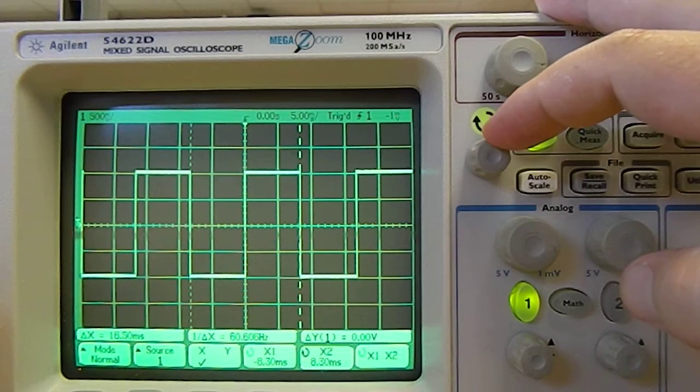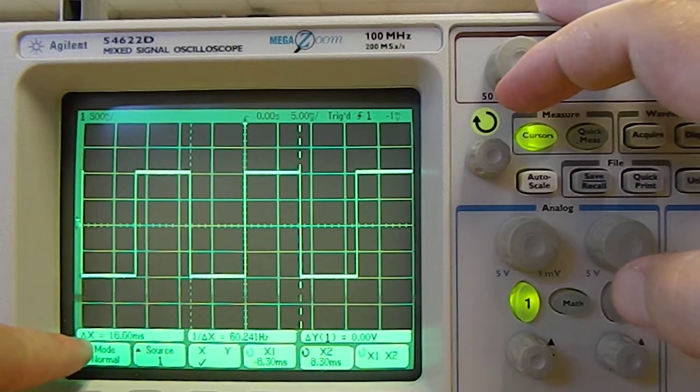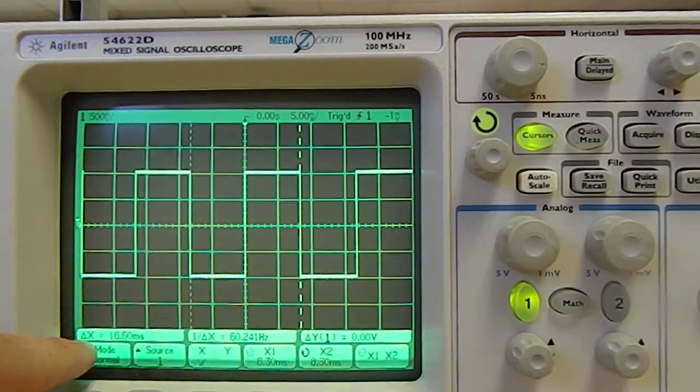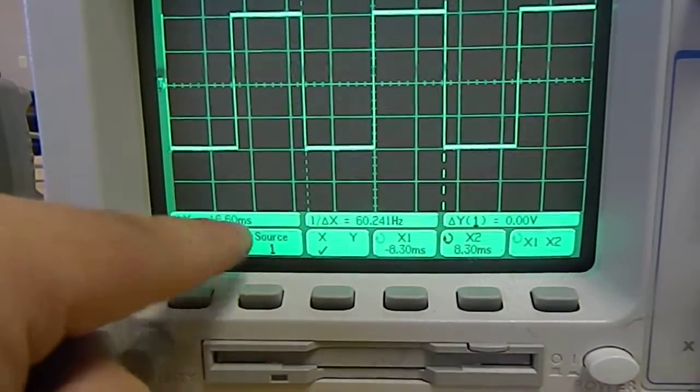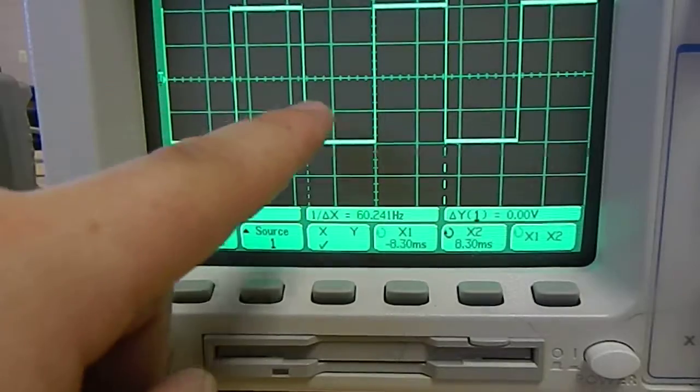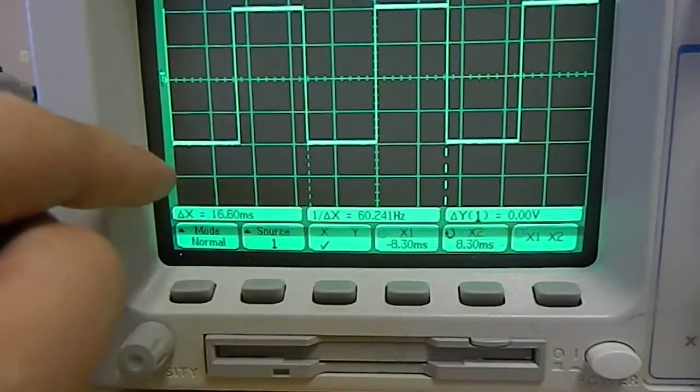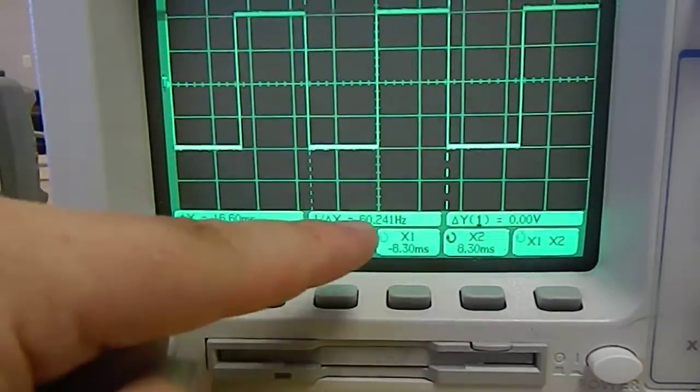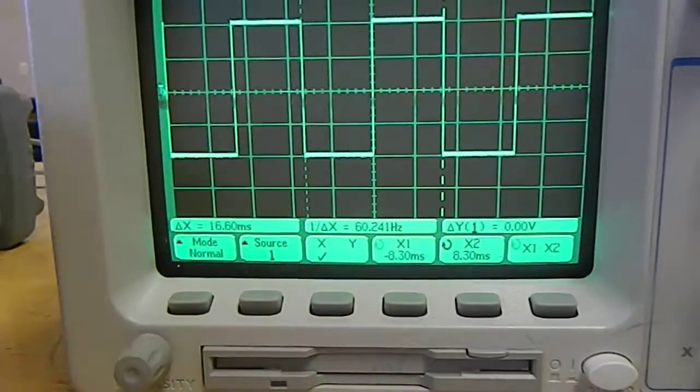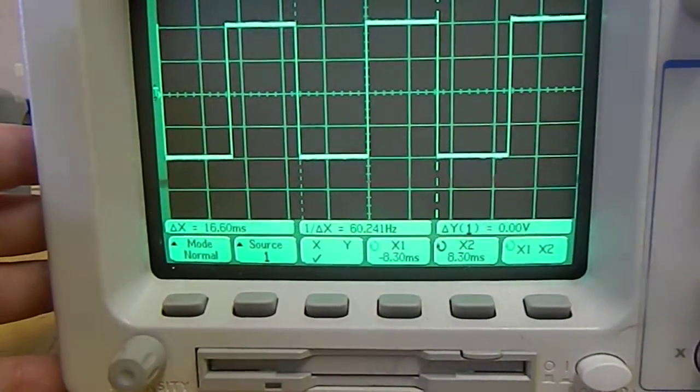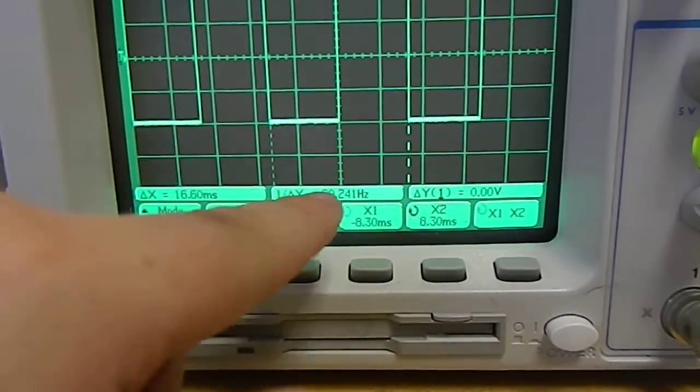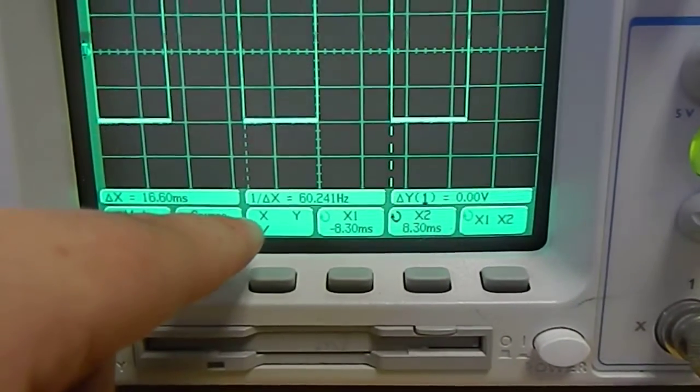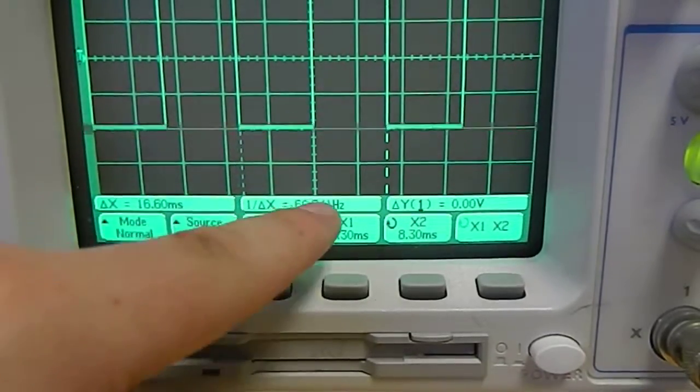And what's interesting about this is that it says right here in this bottom corner, which is probably hard to see from the video, it says delta X. All right? So that's the difference between these cursors, and you can see it's 16.6 milliseconds, which is about correct, this is a 60 hertz square wave.